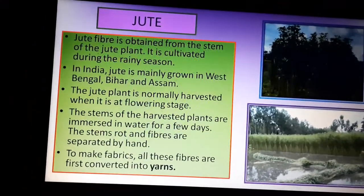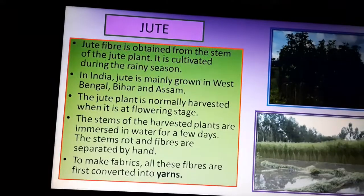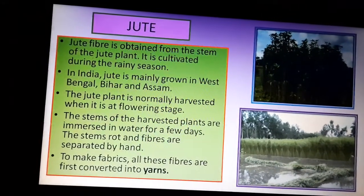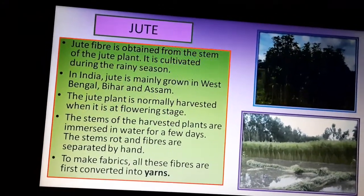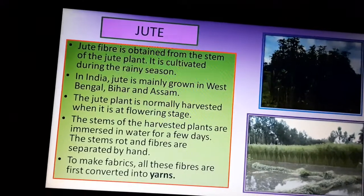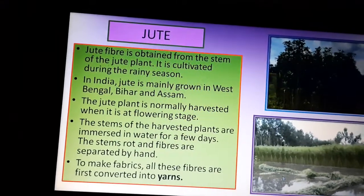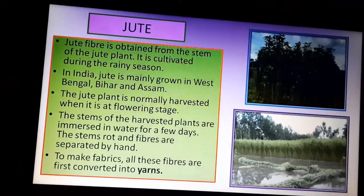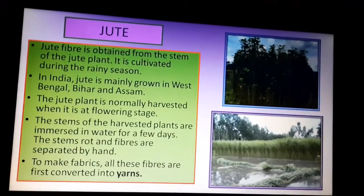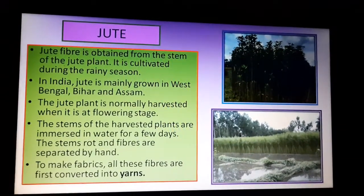The jute plants are immersed in a water-filled place. After staying there for many days, the stems of the jute plant get rotten. The plant tissues become rotten and only the strong jute fibers are left behind, which can then easily be separated by hand.